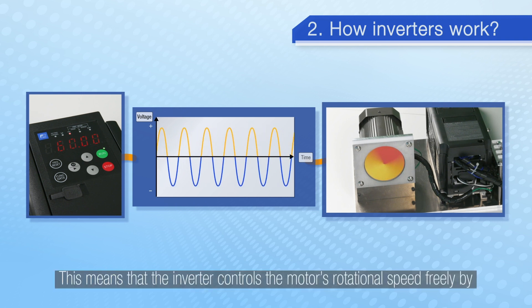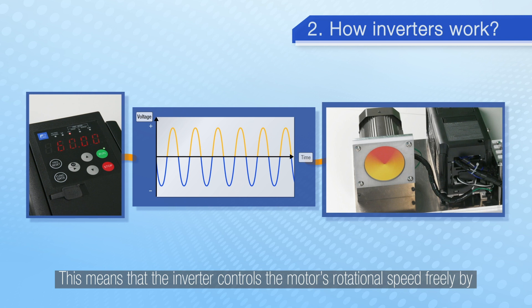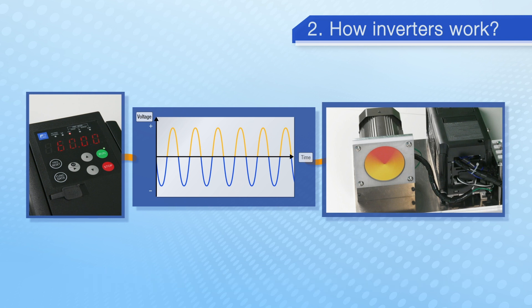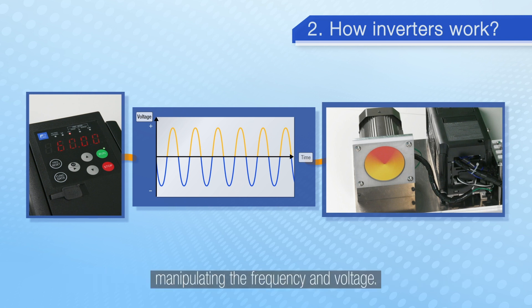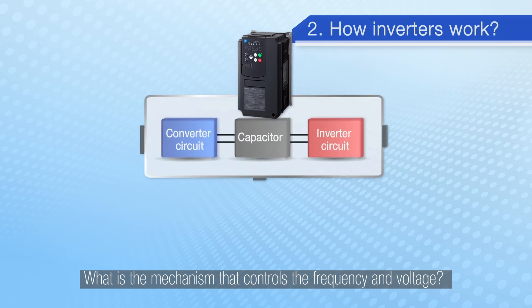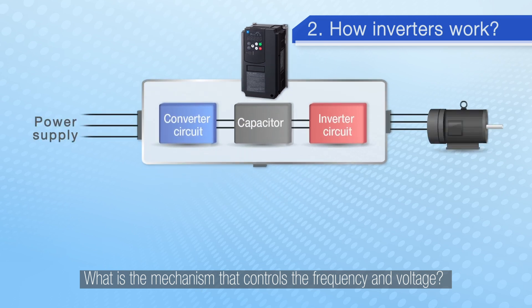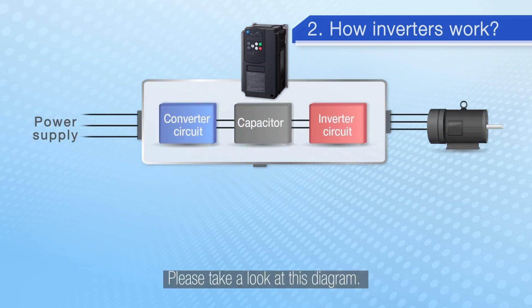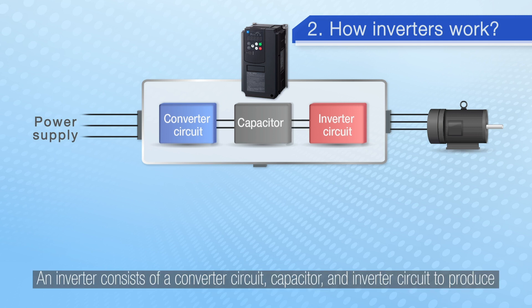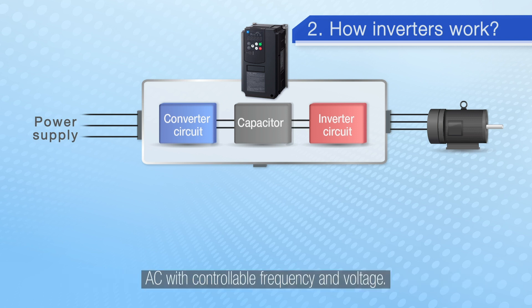The inverter controls the motor's rotational speed freely by manipulating the frequency and voltage. What is the mechanism that controls the frequency and voltage? Please take a look at this diagram. An inverter consists of a converter circuit, capacitor, and inverter circuit to produce AC with controllable frequency and voltage.